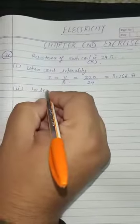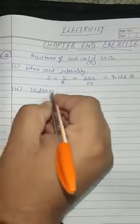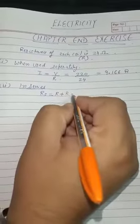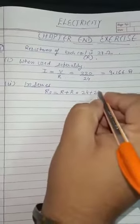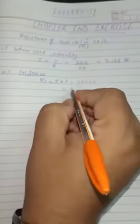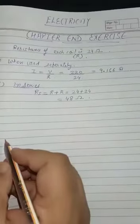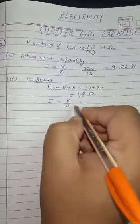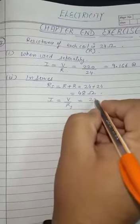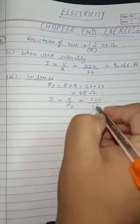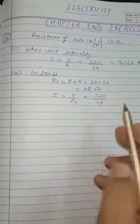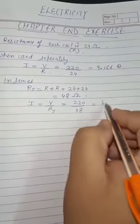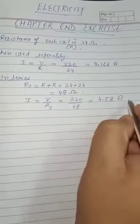When we connect them in series, total resistance will increase: RS is equal to R plus R, that is 24 plus 24, which is 48 ohm. We will find the value of I using Ohm's law: I is equal to V by RS. V is 220 and RS is 48. Since the resistance is doubled, the value of current will become half — it comes out to be about 4.58 ampere.